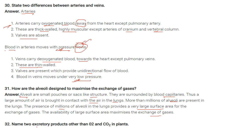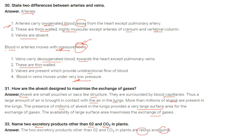Name two excretory products other than oxygen and carbon dioxide in plants: resins and gums.